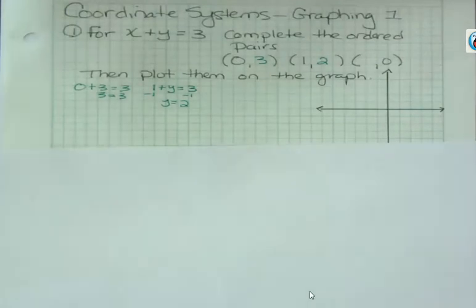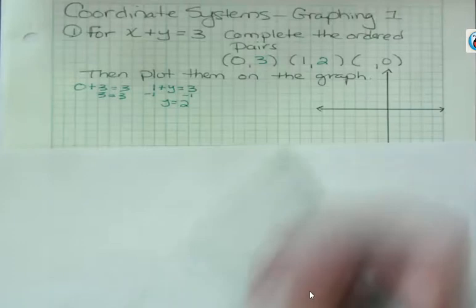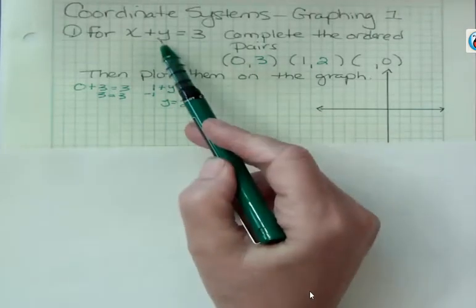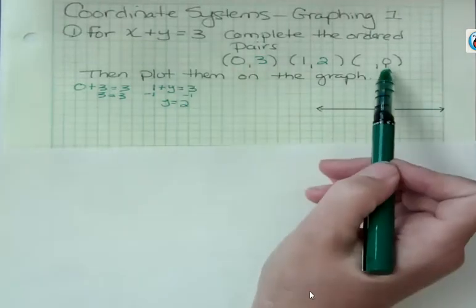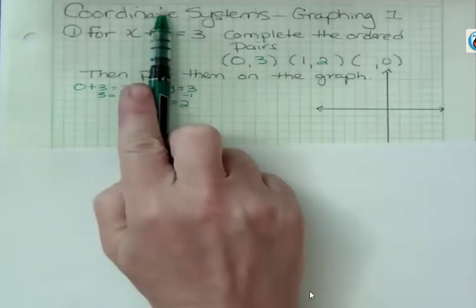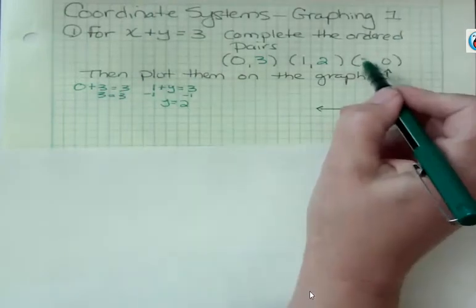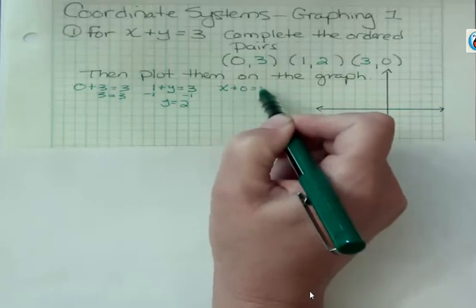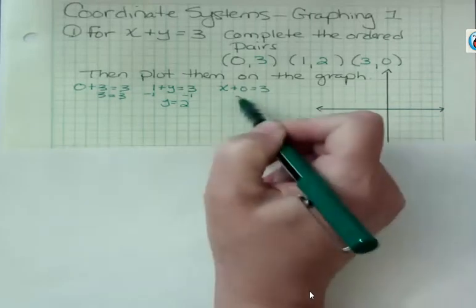We're saying, what's the ordered pair, if x is zero, what's its partner that makes this true? And finally, what if y is zero? Again, by the cover-up method, you could just cover up the y, because if that's zero, it's gone, and x is three. So there's another ordered pair, and we could do that again, plug it in if you don't want to use the cover-up method, and then x is just three. That gives us our three ordered pairs.